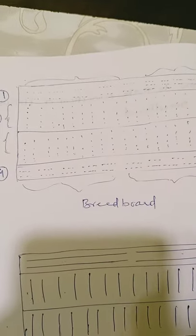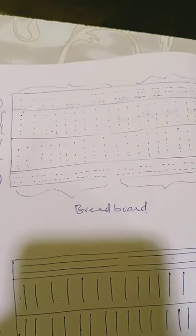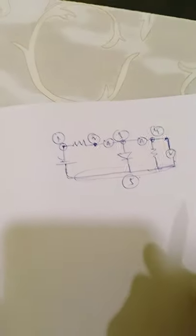If you want to construct any circuit on a breadboard, first of all you need to find the different potential nodes in the circuit. Let's look at this circuit — I have already marked the different potential nodes. What do we mean by different potential nodes?